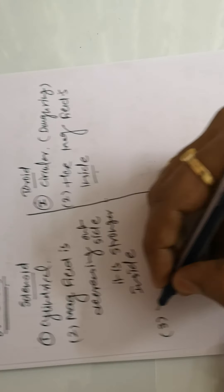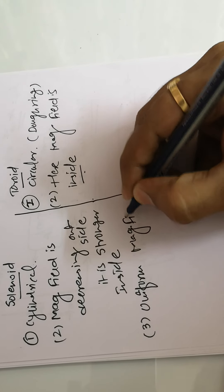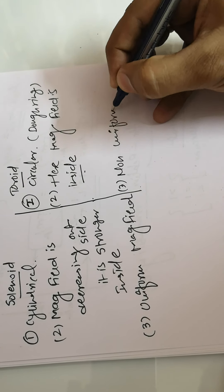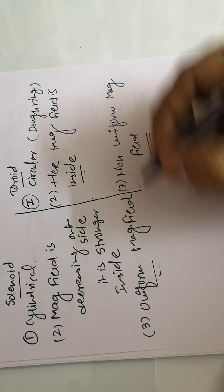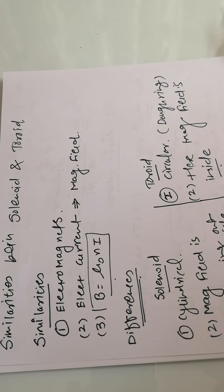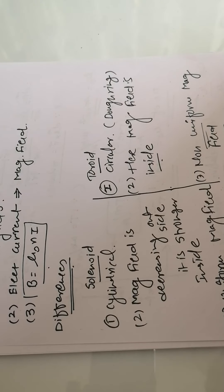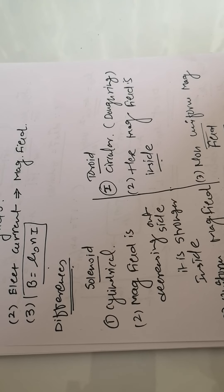Third, a solenoid produces a uniform magnetic field inside, whereas a toroid produces a non-uniform magnetic field (varying with radius r₂). These are the primary differences and similarities between solenoid and toroid. You can also identify additional similarities and differences based on your understanding and equations. I have highlighted the most important ones, and you are now quite familiar with the solenoid and toroid geometry. Thank you.